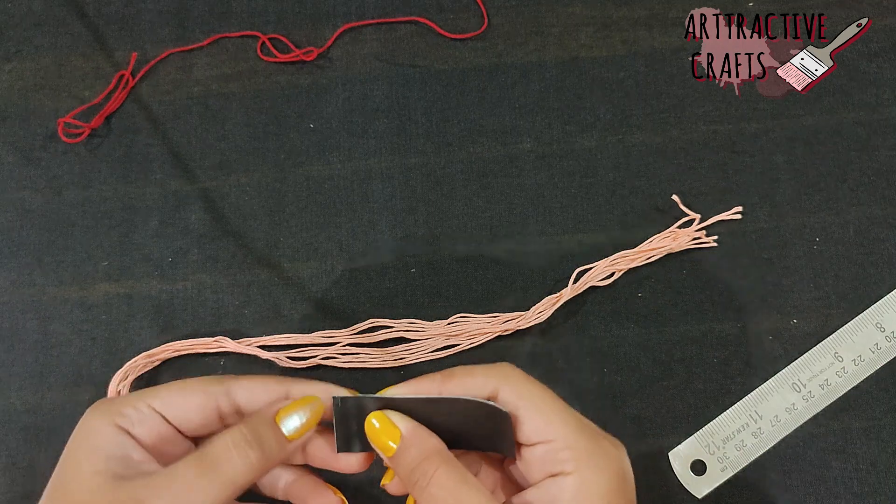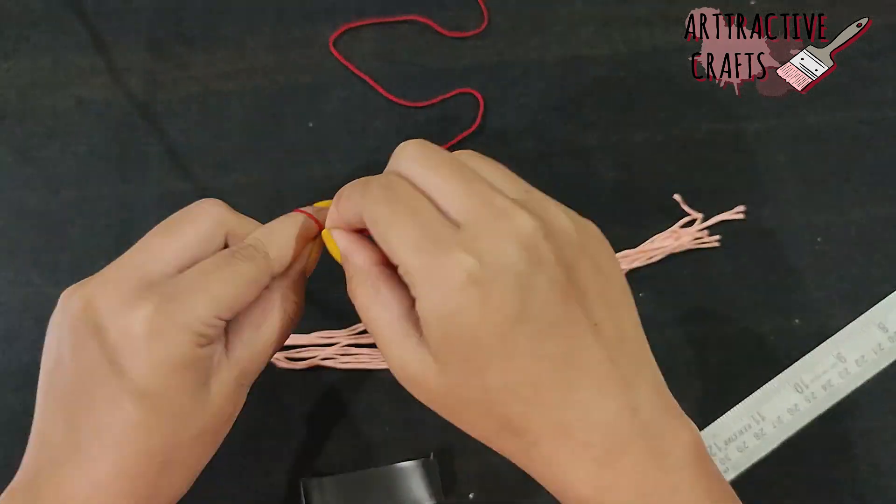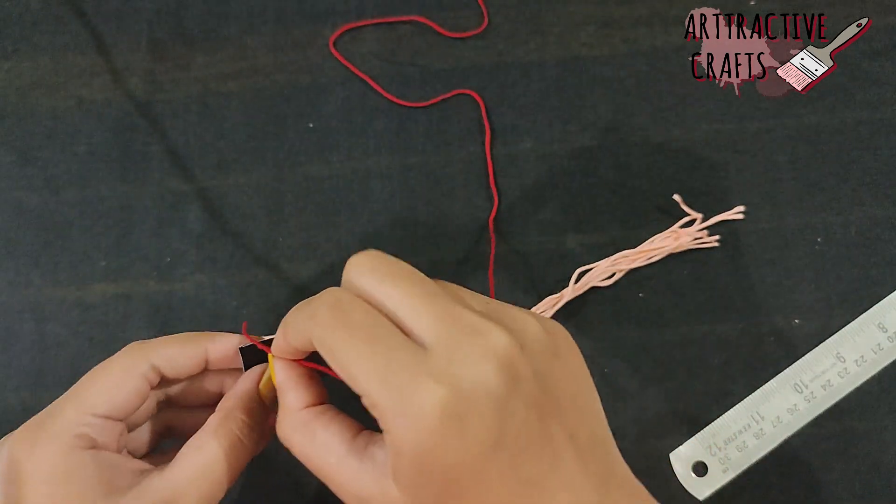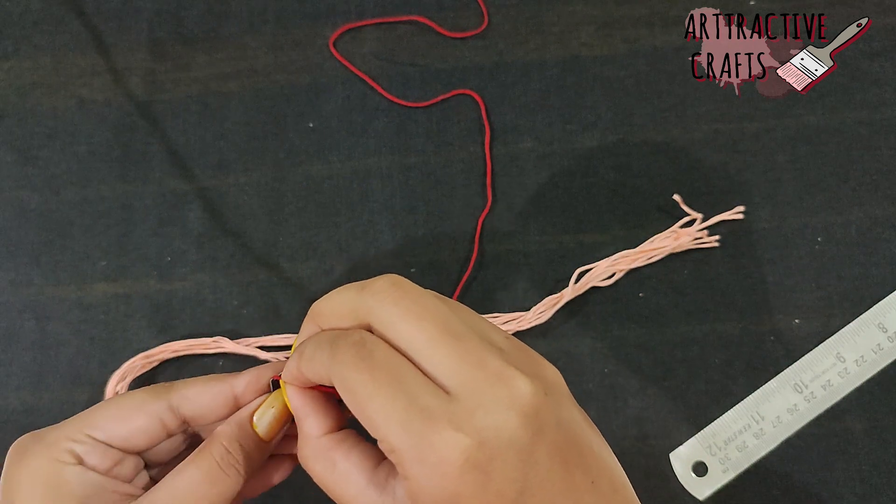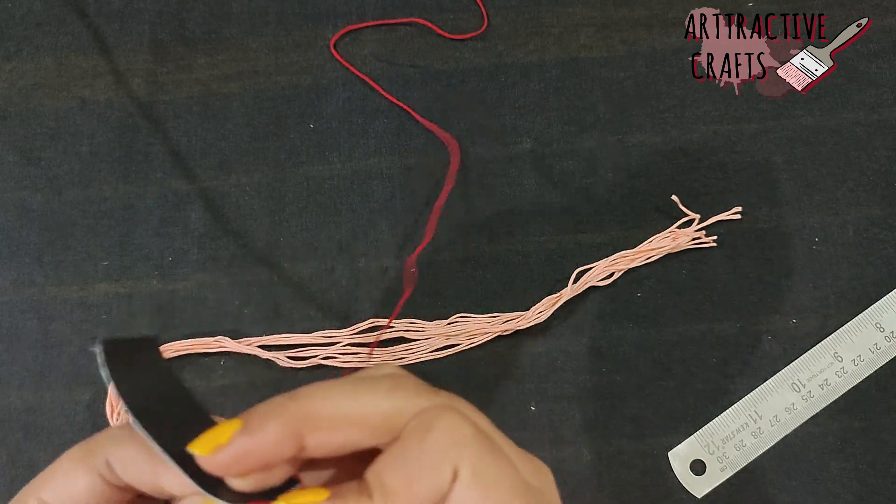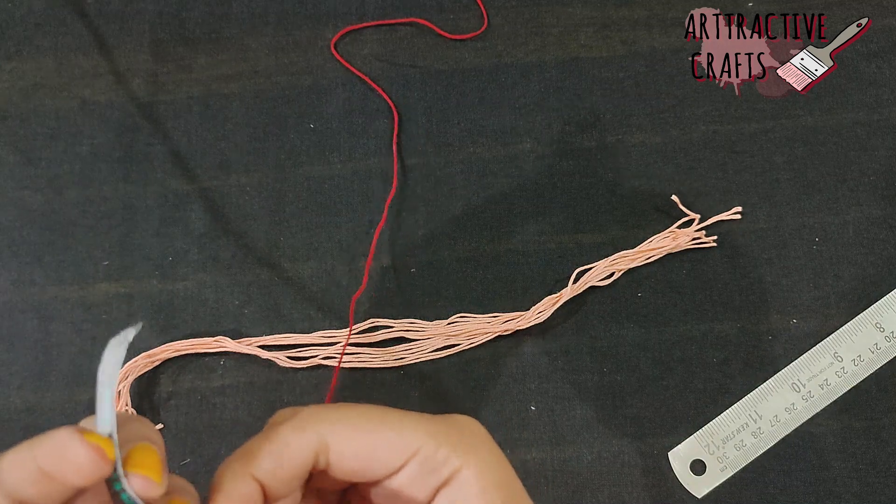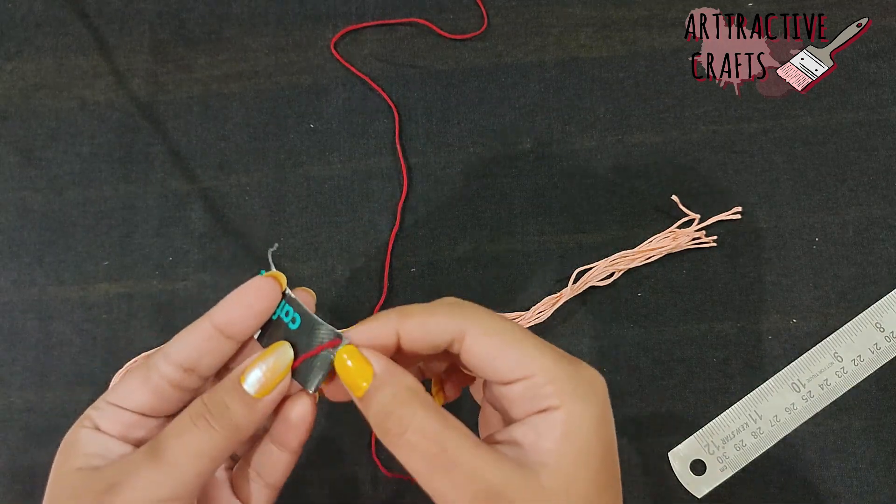Make a small slit of 5mm at the top left corner. Now, take a different colored string and tie a knot at one end to lock it securely by placing the knot in the slit.